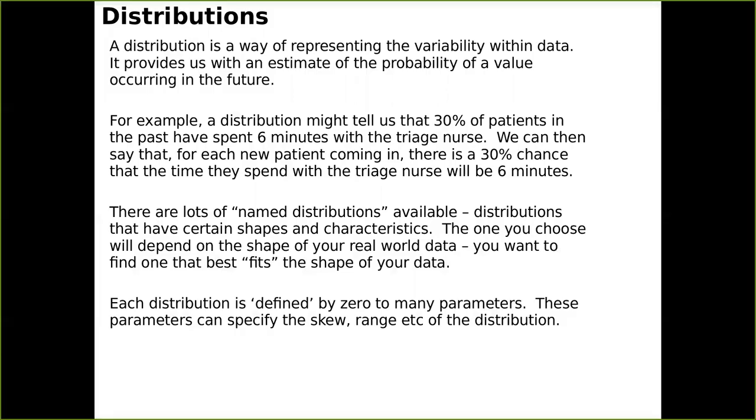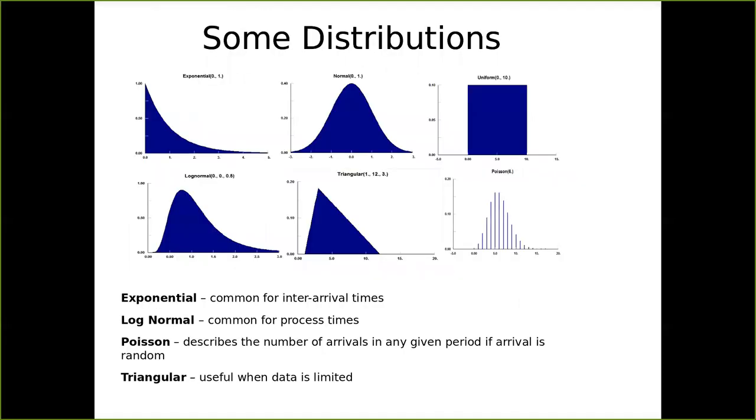So remember, just as a recap, distributions are essentially our way of being able to, within a model, capture that natural variability that we see. Essentially, a distribution specifies the probability of some value occurring in the future and in our model. So it might tell us, for example, that 30% of patients in the past have spent six minutes with a triage nurse, and we can then set up our model such that when a patient comes in, there's a 30% chance that the amount of time that they are sampled or spending with a triage nurse is six minutes. And there's lots and lots of named distributions, and you're trying to essentially fit your real-world data as best you can, to ideally one of these named distributions. And so this little cheat sheet slide, these certainly aren't by any means all of the named distributions, but these are some key ones you'll use, particularly exponential and log-normal distributions, you will use a lot during modeling.